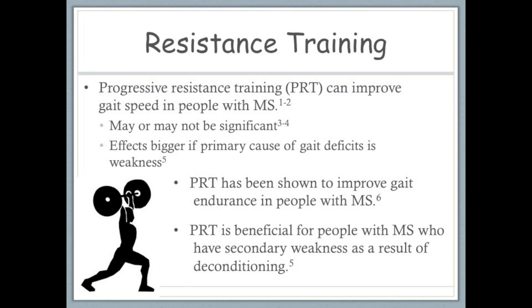Progressive resistance training is one form of exercise that is a focus of a lot of MS literature. It is based on the ACSM guidelines of increasing workload intensity and duration throughout training programs. Overall, progressive resistance training seems to improve gait speed in people with MS, although the clinically important difference that occurs may not be meaningful. Though few studies stratify patients based on the cause of their gait dysfunction, it is thought that the effects of resistance training on gait would be bigger if the primary cause of an individual's gait deficits were due to muscle weakness, especially secondary muscle weakness as a result of deconditioning.